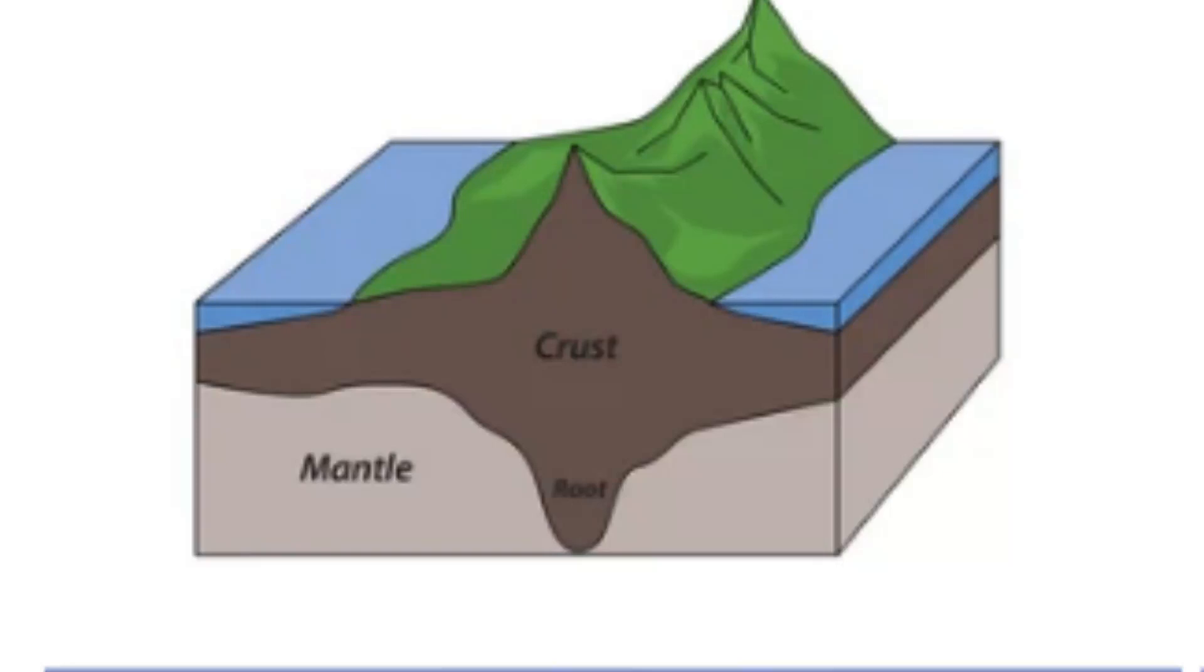What is isostasy? Isostasy is the state of equilibrium that exists between the Earth's lithosphere, the rigid outer layer, and the underlying asthenosphere, the soft, ductile layer.